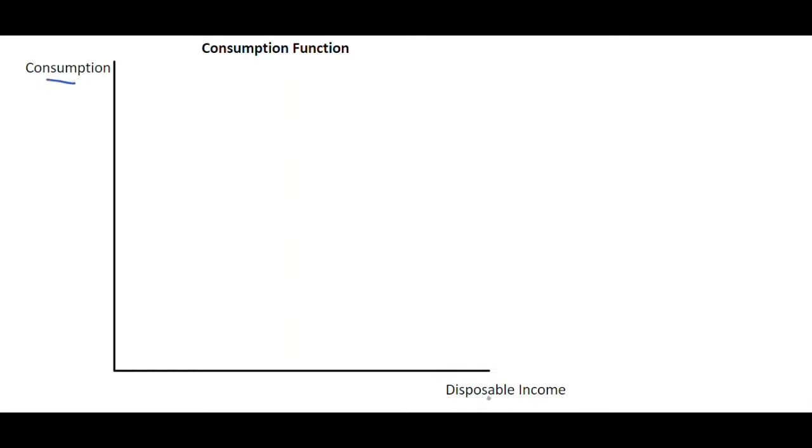Now what we have here is a linear relationship between consumption and disposable income. This linear relationship is upward sloping and what that tells us is that consumption and disposable income are positively related to one another.